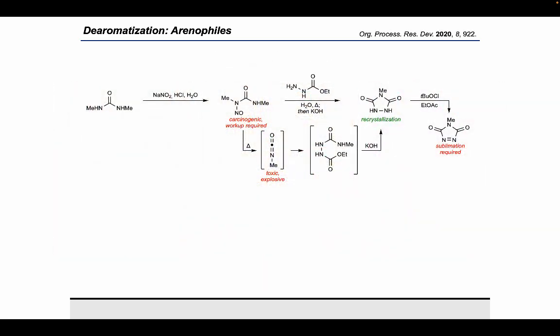It should be noted that the ability to scale this reaction required a more robust and safe route to MTAD. The previous route began with nitrosylation of dimethyl urea, which thereafter was treated with an aqueous solution of ethylcarbazate at elevated temperature. Treatment with KOH to promote cyclization, followed by acidification, led to the corresponding urazole, which required recrystallization. This could then be oxidized in the presence of tert-butyl hypochlorite, which after sublimation provided MTAD in pure form. This route suffered from toxic intermediates, multiple purifications, and required a final sublimation step, which was the true bottleneck for the synthesis.